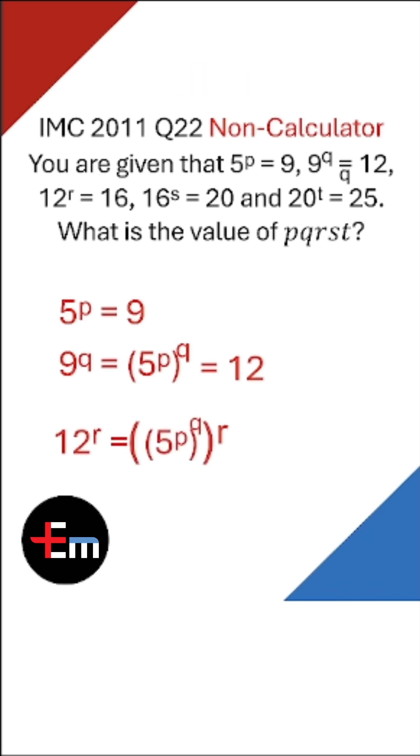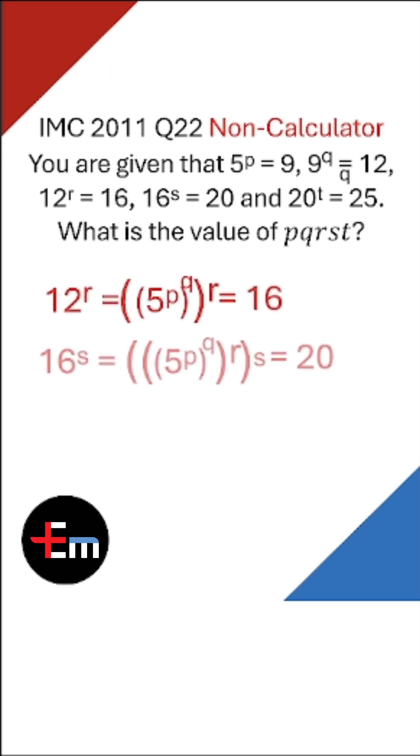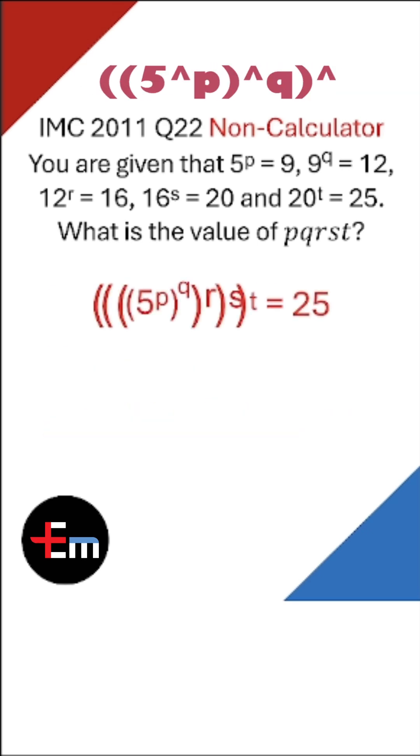So 12 to the r is, with the same logic, 5 to the p to the q to the r. Do that a few more times and we get 5 to the p to the q to the r to the s to the t equals 25.